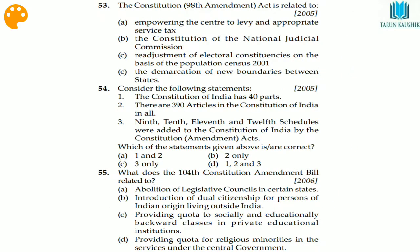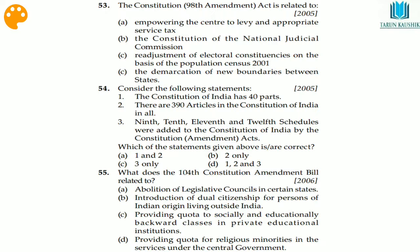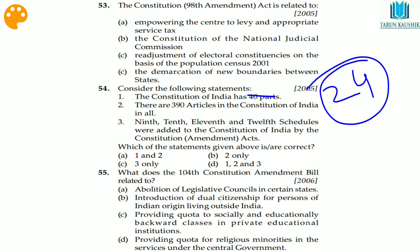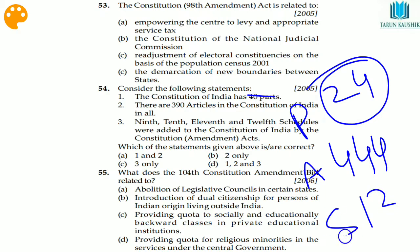Question 53: the 98th Amendment Act is related to the Constitution of the National Judicial Commission — option B. Question 54: the Constitution of India does not have 2040 parts; it has 24 parts, 395 articles, and 12 schedules. The 9th, 10th, 11th, and 12th schedules were added to the Constitution by subsequent constitutional amendment acts. So statement 3 is correct — option C.